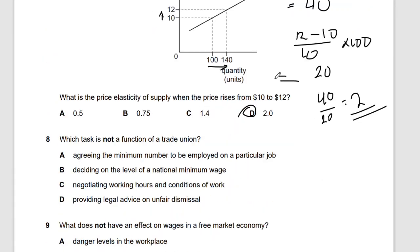Question eight: which task is not a function of a trade union? Trade unions only deal with workers. Agreeing the minimum number to be employed on a particular job — that is something they do. However, deciding on the level of the national minimum wage is not a trade union function — the word 'national' is a clue, as they can only deal with the company's wage.